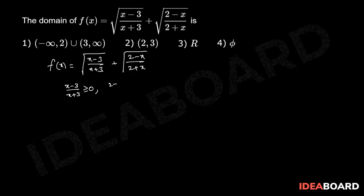And (2-x)/(2+x) greater than or equal to 0. And x not equals to -2, -3. That implies (x-3) into (x+3) greater than or equal to 0. And (2-x) into (2+x) greater than or equal to 0, x not equals to -2, -3.